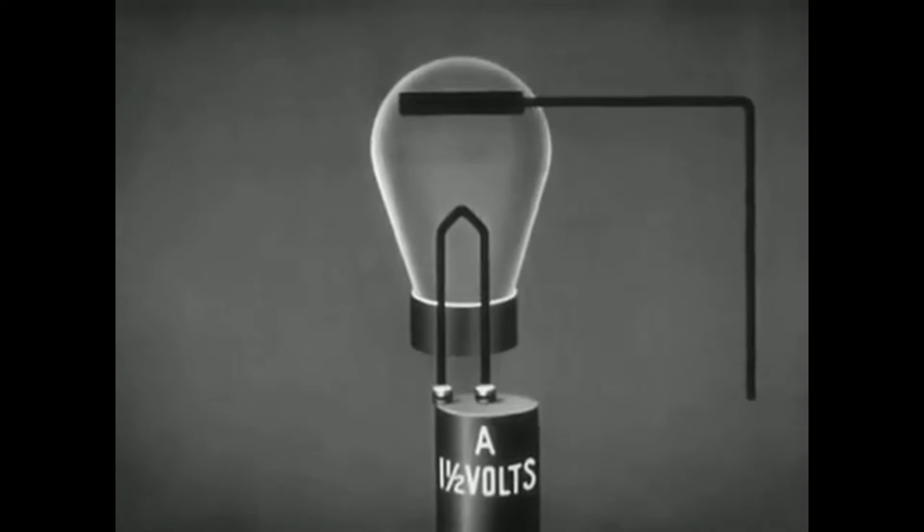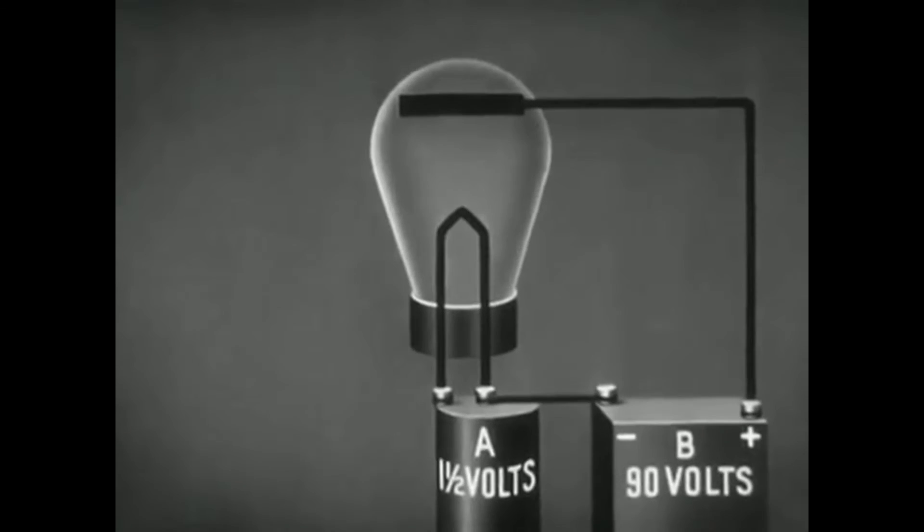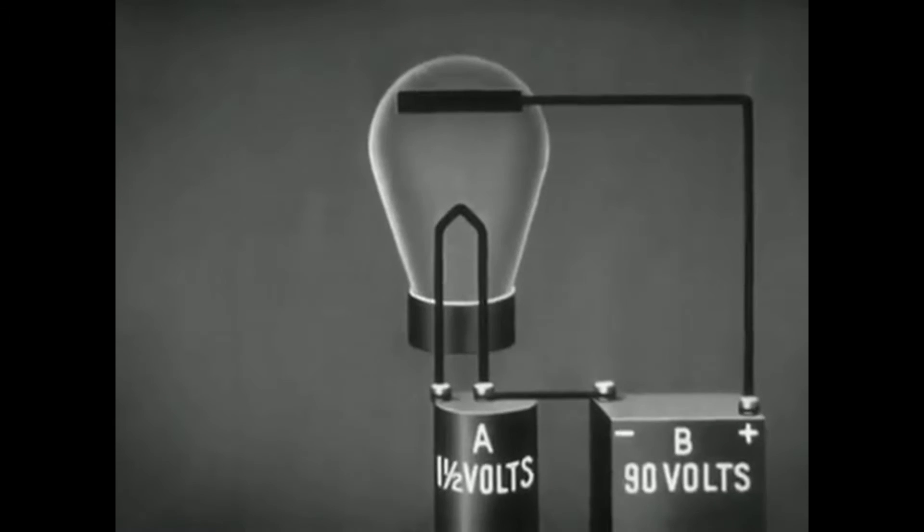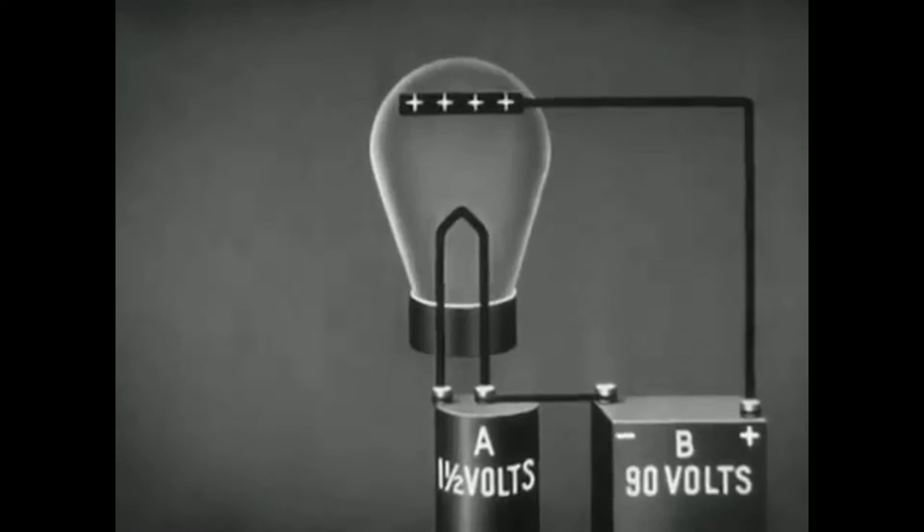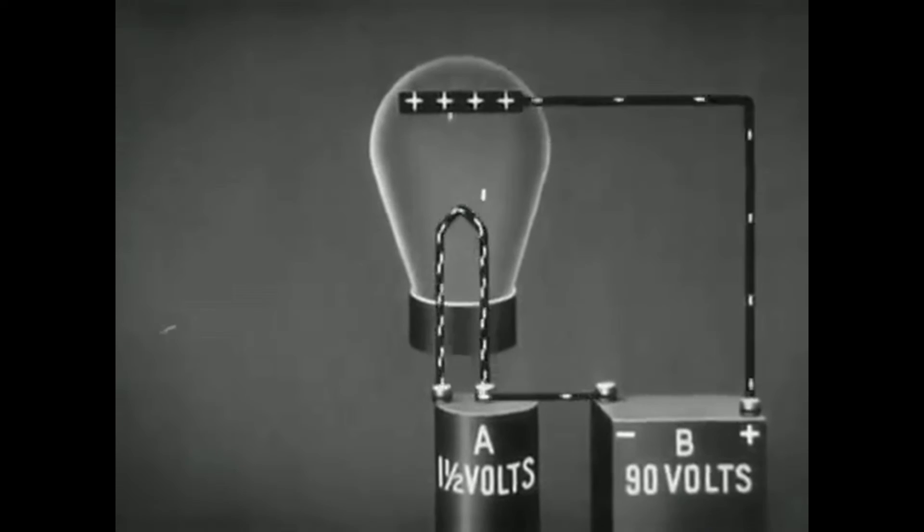This directly heated type of emitter gave way to tubes with separate cathode to provide the electrons, referred to as indirectly heated. The materials of the filament or cathode determined the operating voltage needed to emit electrons.